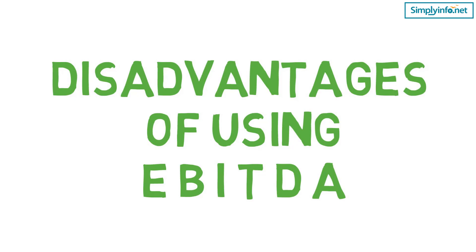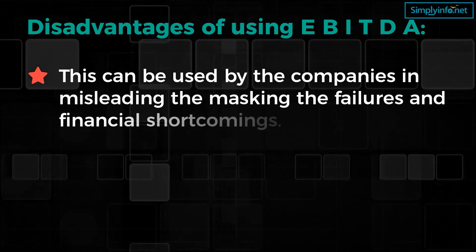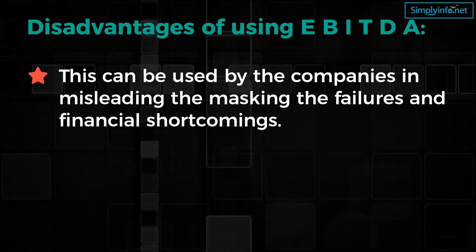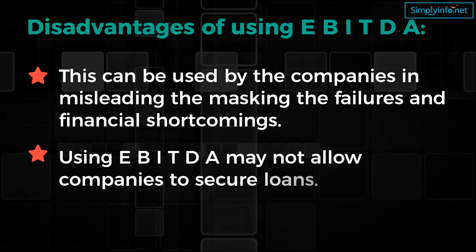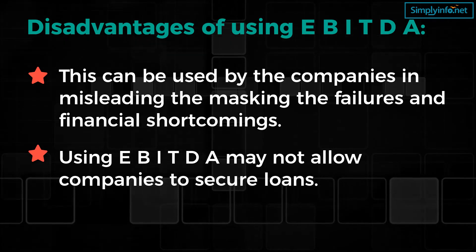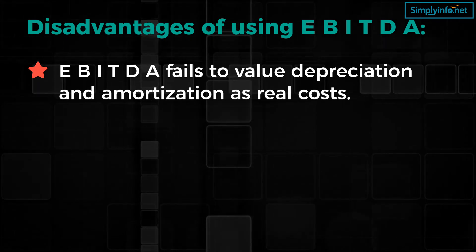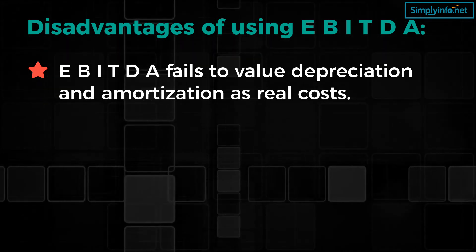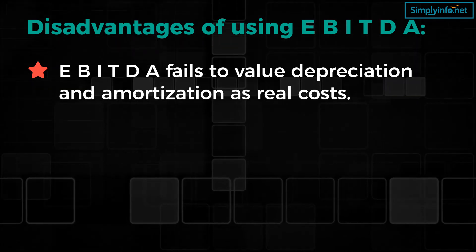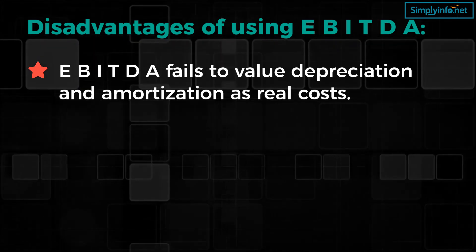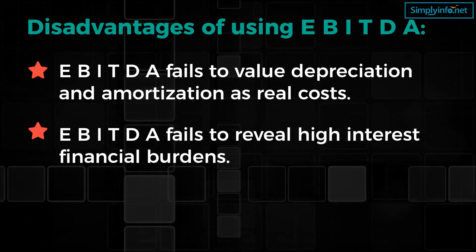Now, let's look into some of the disadvantages of EBITDA. EBITDA excludes debt expenses of a company by adding taxes and interest back to the earnings, which can be used by companies to mislead by masking failures and financial shortcomings. Using EBITDA may not allow companies to secure loans, as loans are calculated on a company's actual financial performance. EBITDA fails to value depreciation and amortization as real costs — patents and copyrights expire over time, and machines and resources decrease in value and depreciate, but EBITDA fails to acknowledge these costs. EBITDA also fails to reveal high interest financial burdens.